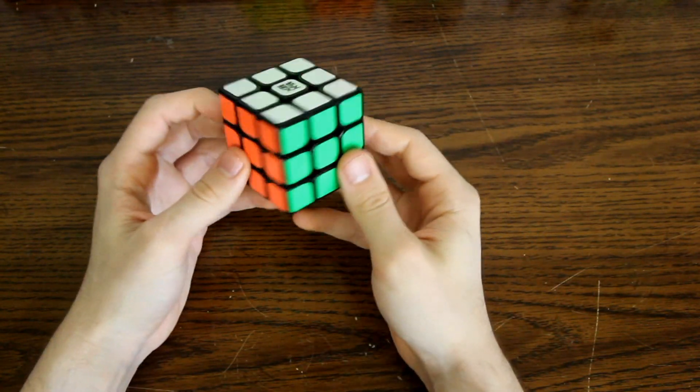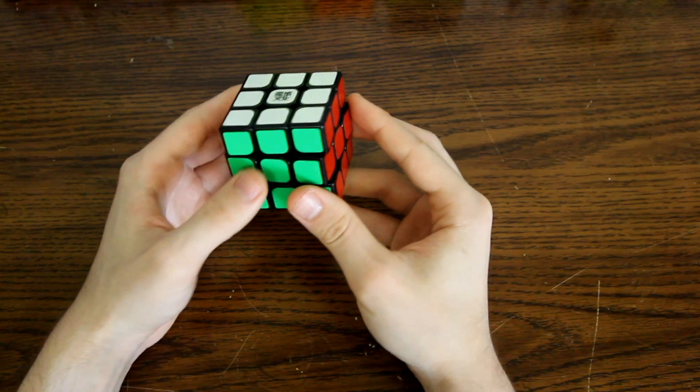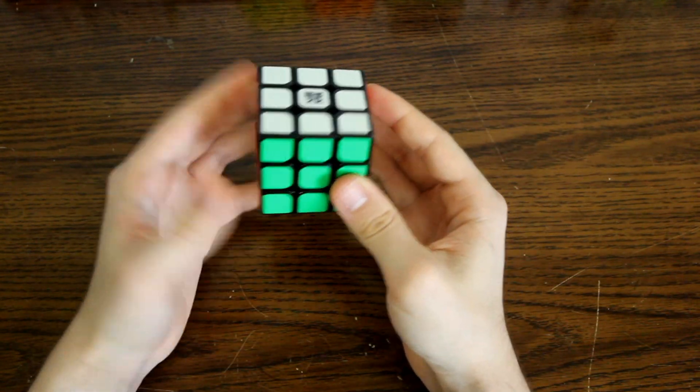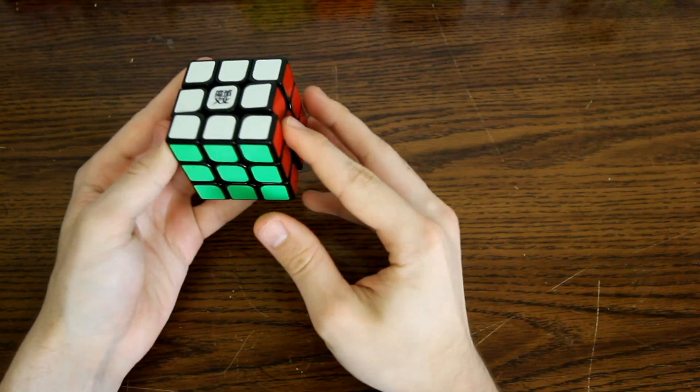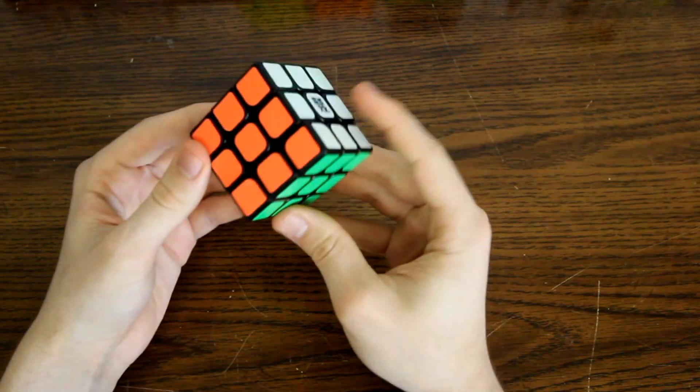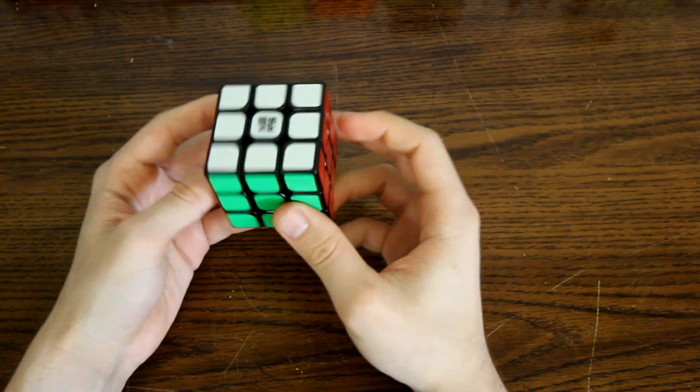I also use this cube quite a bit for multiple blindfolded solves. Because I turn slower while I'm blindfolded, I can pretty much trust that it's not going to corner twist, and it hasn't happened to me yet, and I've done a bunch of blindfolded solves on it.